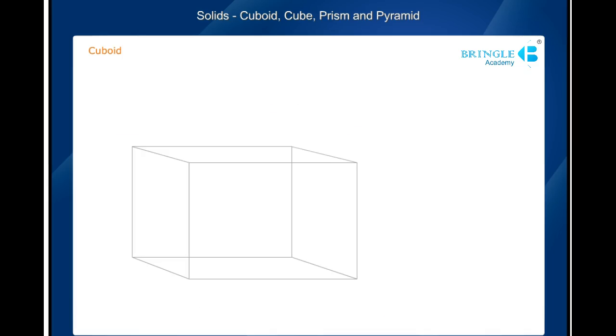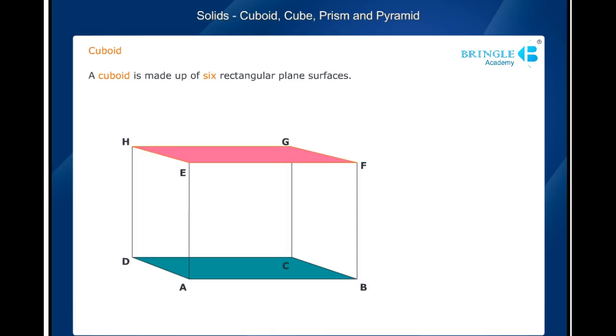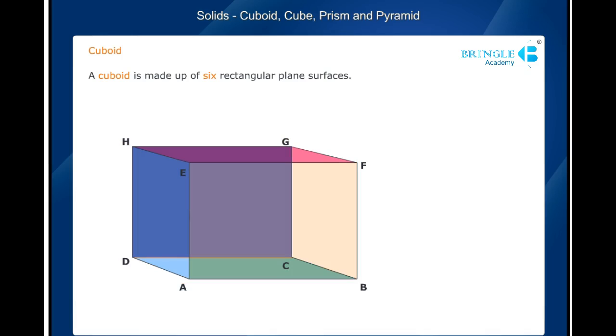Cuboid. The figure shown here represents a cuboid. It is clear from the figure that a cuboid is made up of six rectangular plane surfaces. They are ABCD, EFGH, ADHE, BFGC, ABFE, and DCGH. Each surface is called a face of the cuboid.